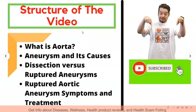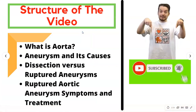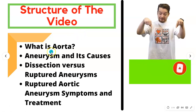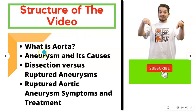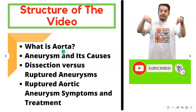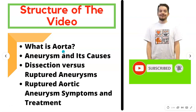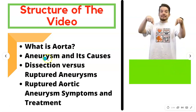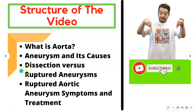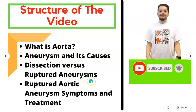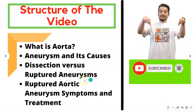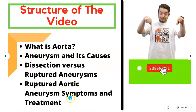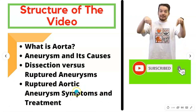This is the plan for our video. Since everything happens in the aorta, we are going to define what the aorta is. Then we see aneurysm and its causes. We compare dissection versus ruptured aneurysms, and then we have ruptured aortic aneurysm symptoms and signs.